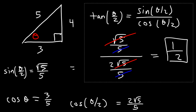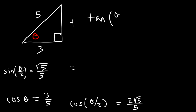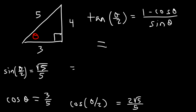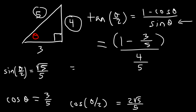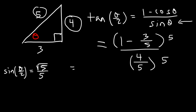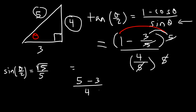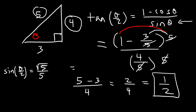Another formula you can use gives the same result. We already know cosine θ is 3/5. Sine θ equals the opposite over hypotenuse, which is 4/5. Using that formula and multiplying top and bottom by 5 gives (5 minus 3) over 4, which is 2/4, reducing to 1/2. So tangent(θ/2) for this example is 1/2, confirming our answer.